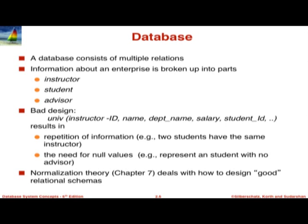Before we get into specifics, I want to show another example of bad design, where we combine instructor ID, name, department name, salary, student ID and other attributes from three different relations — instructor, student, and advisor. Why on earth would we combine information like this? The point of normalization is: how do we get at the correct set of relations in the first place? The formal work on normalization theory was based on putting all the information about a particular enterprise into one single relation called the universal relation.